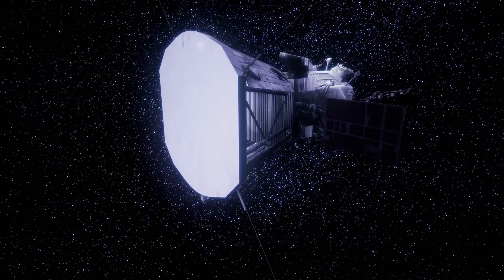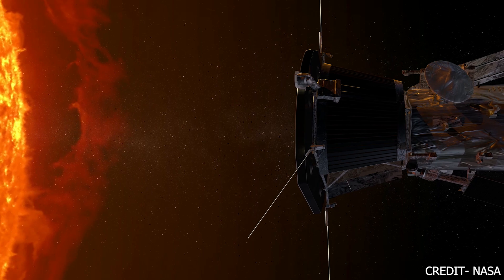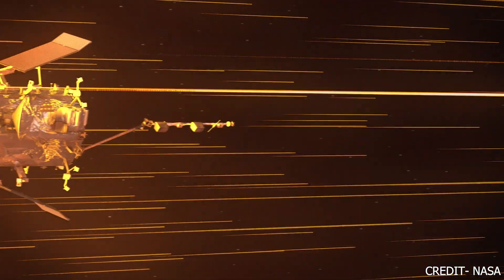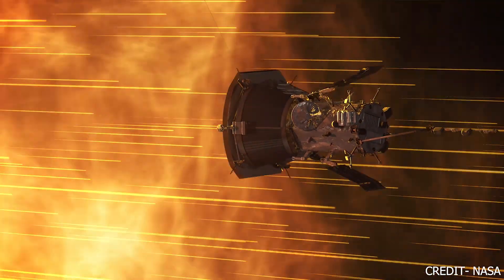Similarly, the Parker Solar Probe has been able to survive due to the mechanism of heat transfer. Because the density of the corona is much less than the surface of the sun, the hot particles do not collide with the spacecraft. If the probe were sent to the surface of the sun, it would immediately melt because there are more particles that would attack it simultaneously.